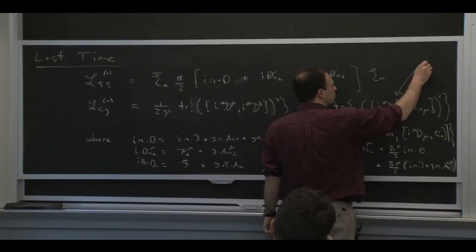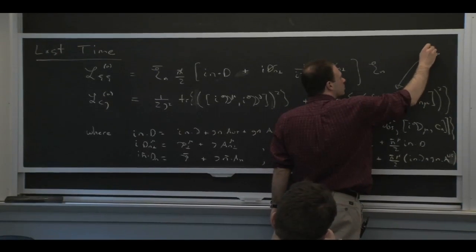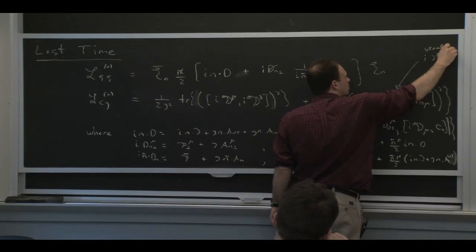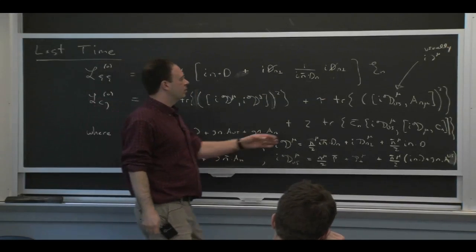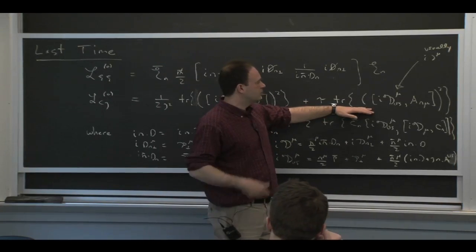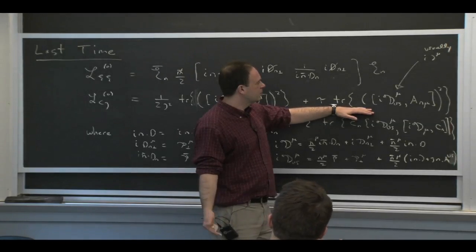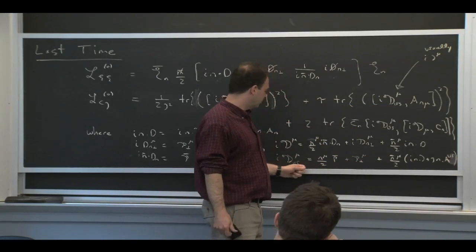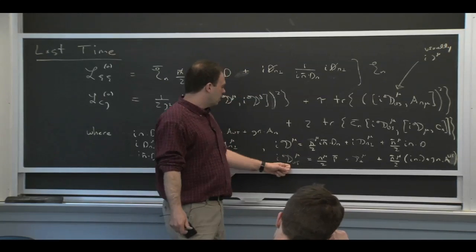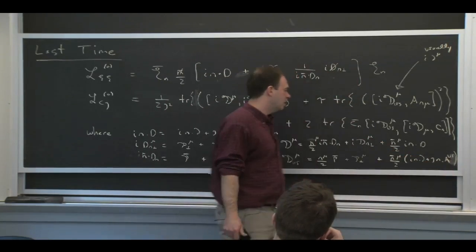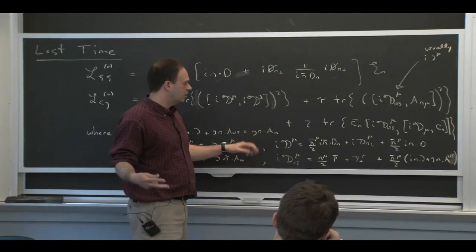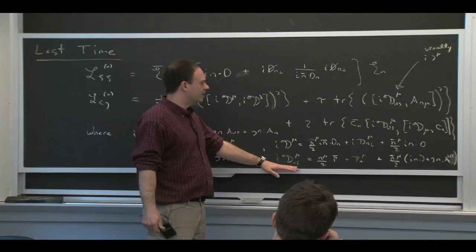In this Lagrangian, the usual way it would look, this would be i partial. I said that because we don't want the collinear gauge fixing term to break ultrasoft gauge invariance, we're going to turn that i partial into a covariant derivative, including this piece here at the n dot A ultrasoft to make it ultrasoft gauge invariant at lowest order.